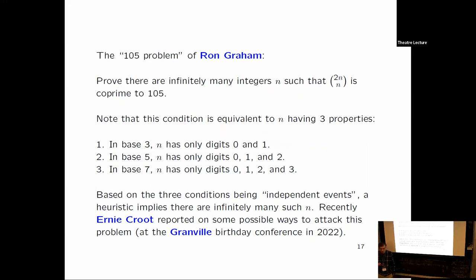Here's a problem that Ron Graham brought to me. It's due to Ron Graham, and he offered a thousand dollars for it, but he's passed away. So I'm not sure how the thousand dollars is still in operation. But anyway, it's a nice problem. And here's what it is. You look at the binomial coefficient 2n choose n, and you ask, how often is that relatively prime to 105?